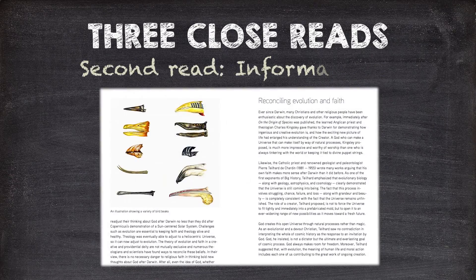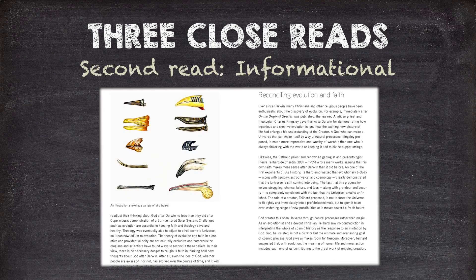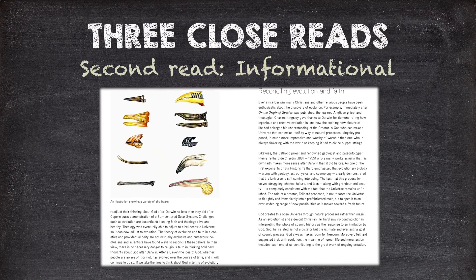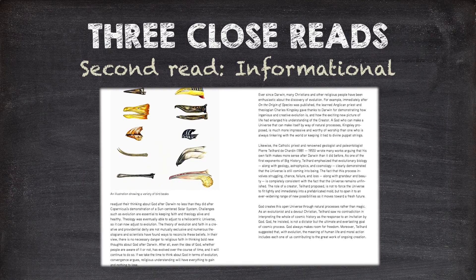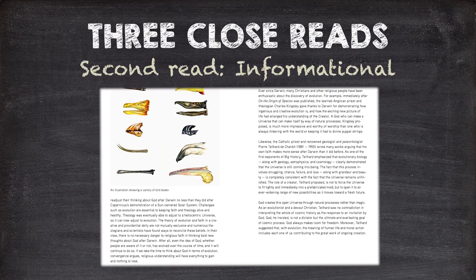The second read looks for key ideas, vocabulary and facts in the reading. Big History refers to this as the informational or factual reading. Now students pull out the main ideas to summarise the article. Every article in the course includes a set of these questions and sample answers for you in the lesson view. These questions don't cover everything, but will give a great head start for your class.